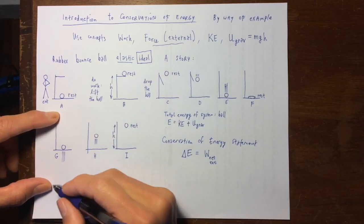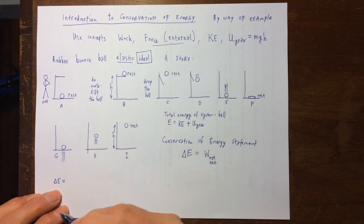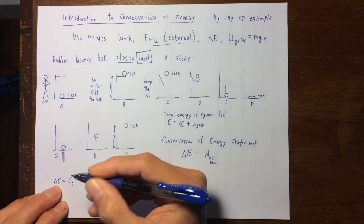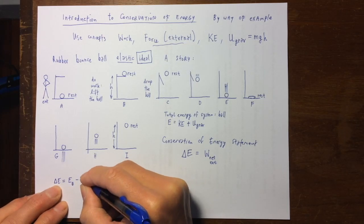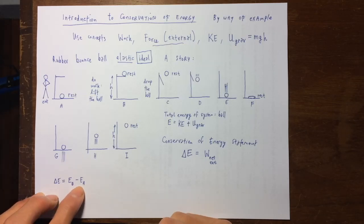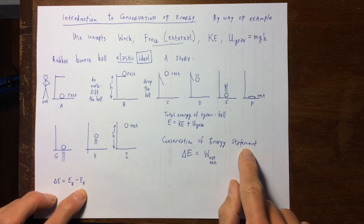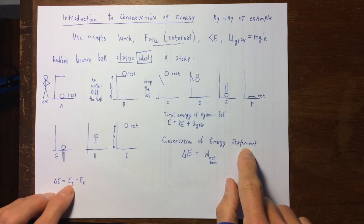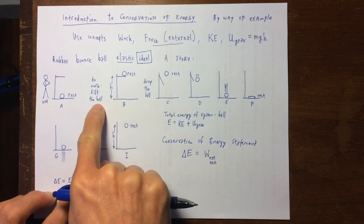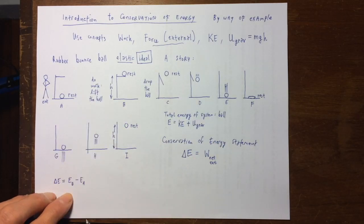So delta E — the change in energy between the later time B and the earlier time A — is EB minus EA. According to the conservation of energy, the only reason these two energies can be different is this work process that happens between A and B by some external influence.